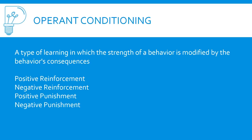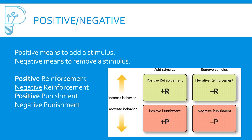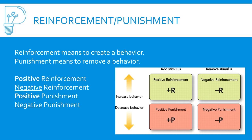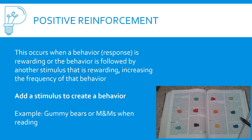The other type of conditioning is operant conditioning — a type of learning in which the strength of a behavior is modified by its consequences. There's positive reinforcement, negative reinforcement, and positive and negative punishment. Positive means adding a stimulus; negative means removing one. Reinforcement means creating a behavior; punishment means removing one. Positive reinforcement is adding a stimulus to create a behavior — for example, putting gummy bears on your textbook and eating one after each paragraph you read increases the frequency of reading.